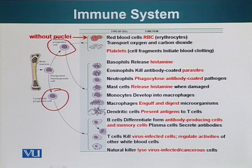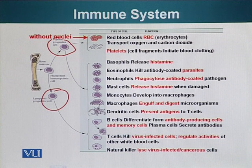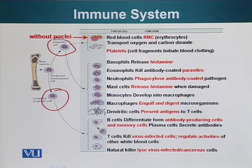The myeloid progenitor cell gives rise to two groups of cells. One group does not have any nucleus and is composed basically of RBCs — red blood cells — which give our blood the red color because they have iron in them. Iron is required to carry oxygen to different parts of the body. Platelet cells are actually fragments of a cell and they initiate blood clotting.